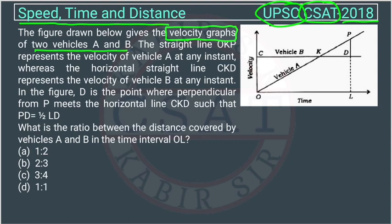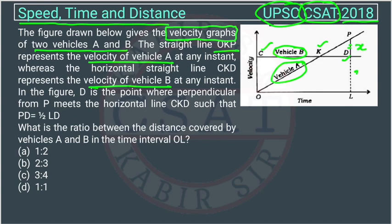The straight line OKPE represents the velocity of vehicle A, whereas the horizontal straight line CKD represents the velocity of vehicle B. In the figure, D is the point where the perpendicular from P meets the horizontal line CKD, such that PD is equal to x. This distance LD is given as 2x, because PD is equal to half of LD. The question is asking for the ratio of distance covered by vehicle A and B in the time interval OL.